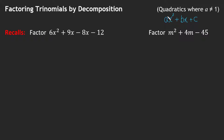It's called a monic trinomial when A is 1, which we see in this example here. And it's non-monic when A is not 1. First, a couple of recalls.